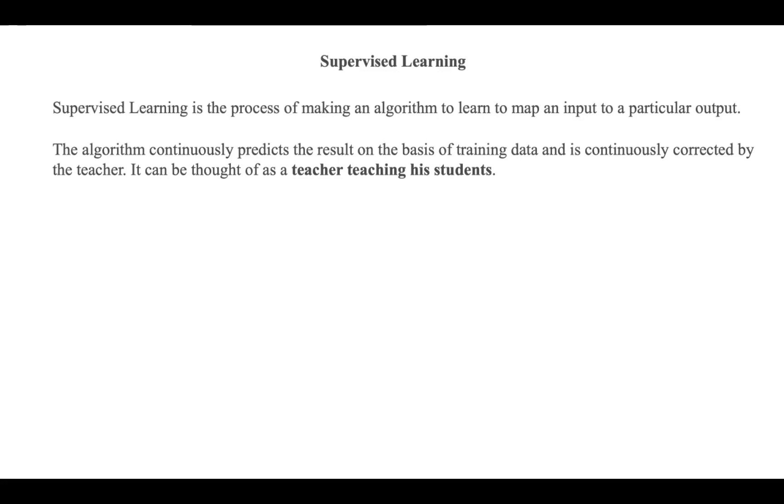The algorithm continuously predicts results based on the training data, and whenever required it is corrected by the teacher. This is why this algorithm can be thought of as a teacher teaching students. If the mapping is correct, the algorithm has learned successfully; if not, it is corrected so it can learn correctly.